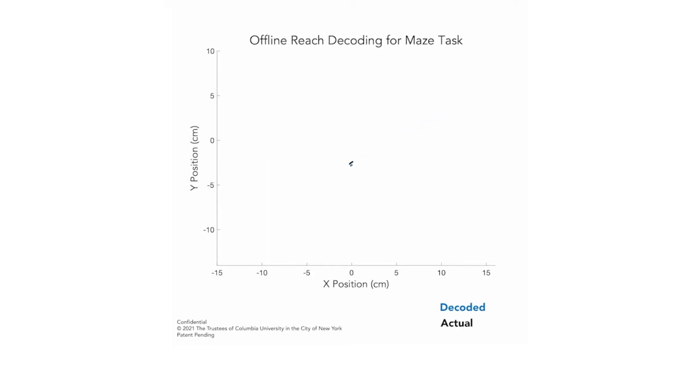In black, you're seeing the actual reach trajectories. Some of them are straight. Some of them are curved because he sometimes has to reach around barriers in order to get to the target and get his reward. And the video hasn't been sped up. This is real time.